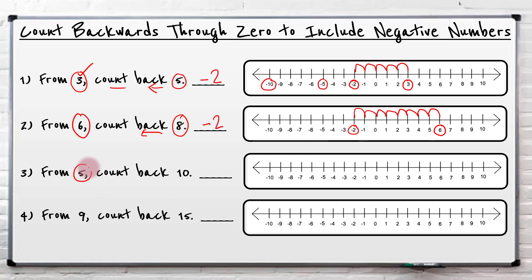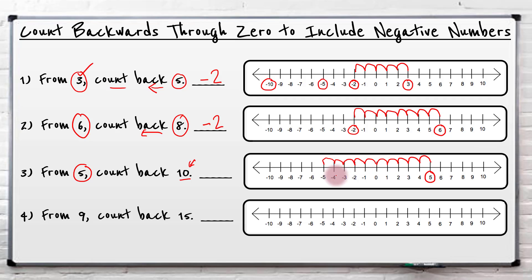Now from five, count back ten. It's a good bit more but it's exactly the same principle. So I find my five and count back ten jumps, making sure you jump to each of the lines — not in between the lines, to each of the lines. One, two, three, four, five, six, seven, eight, nine, ten. I've gone back ten from five which takes me to negative five.